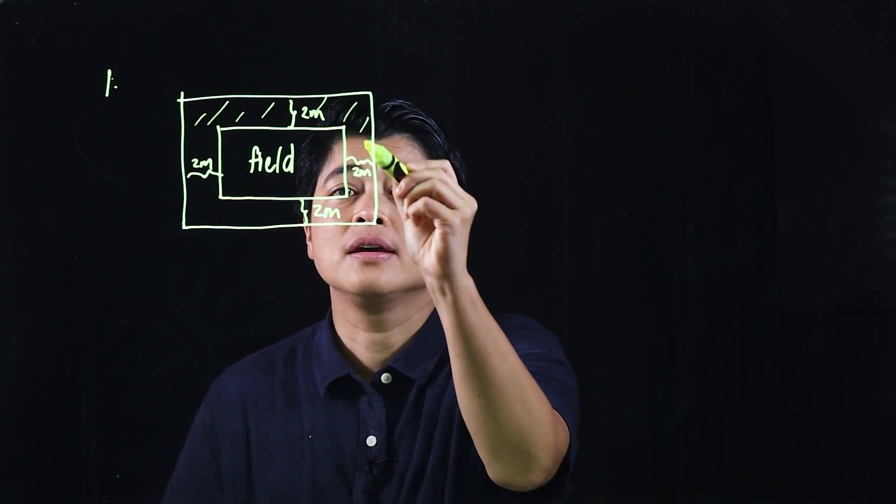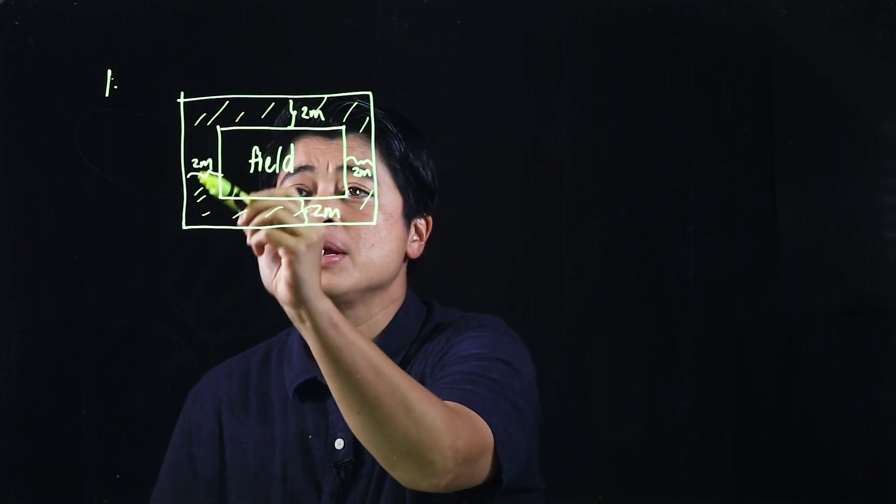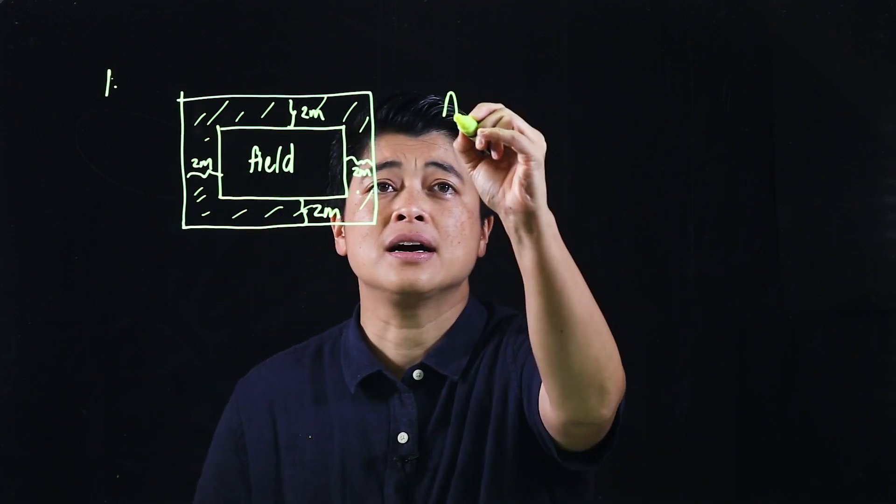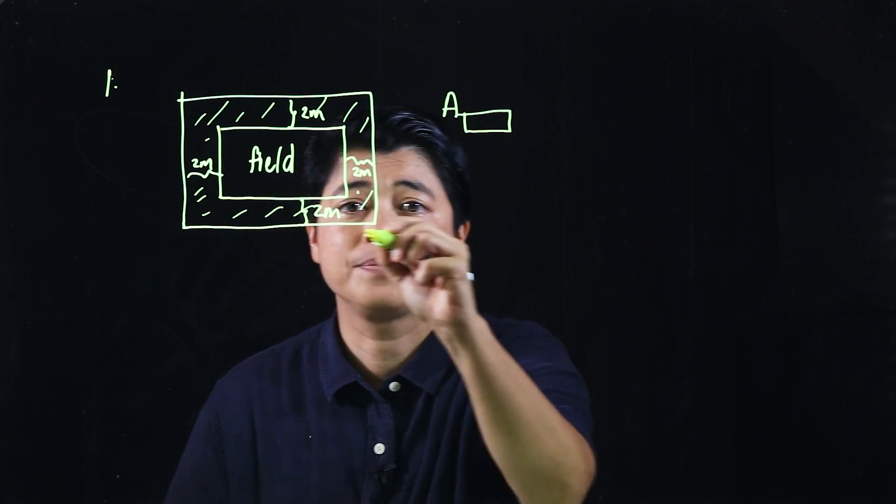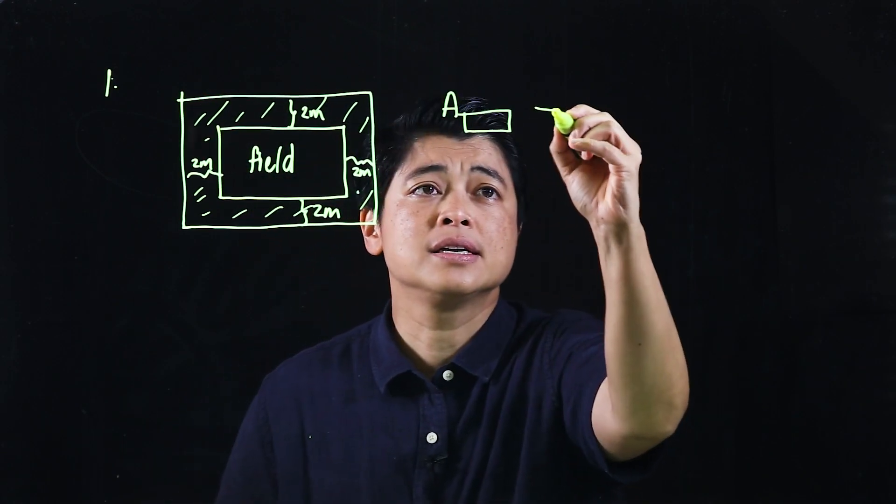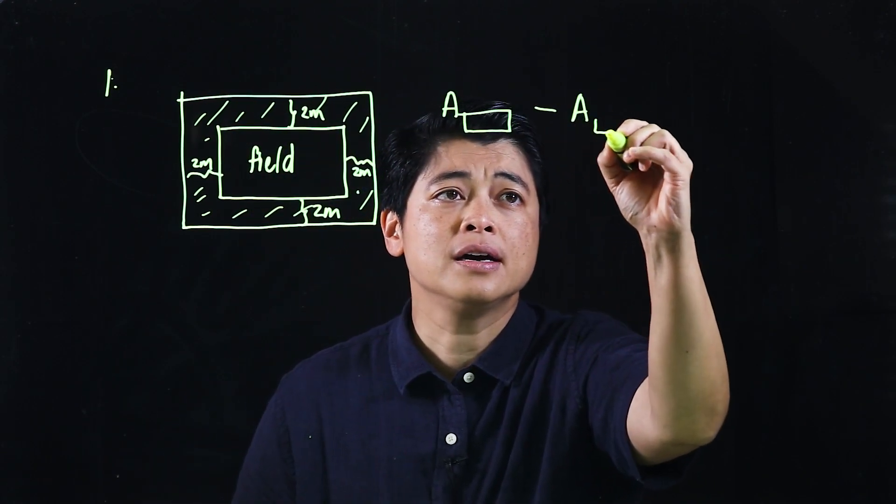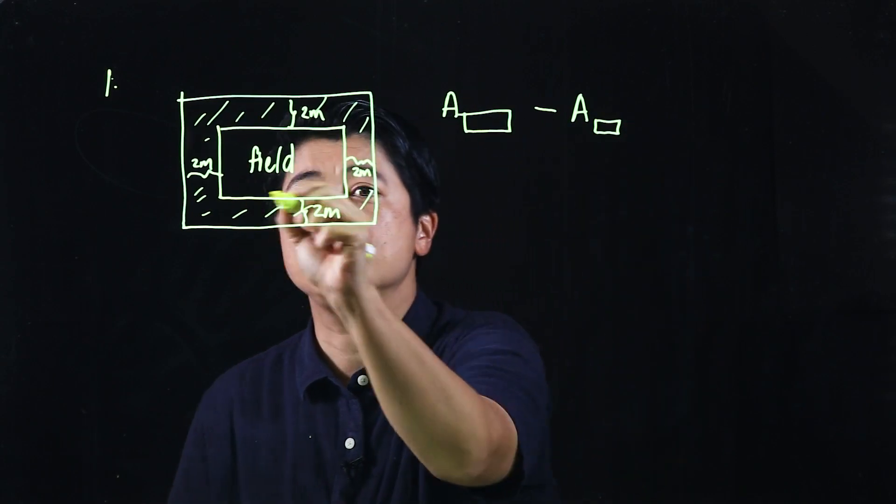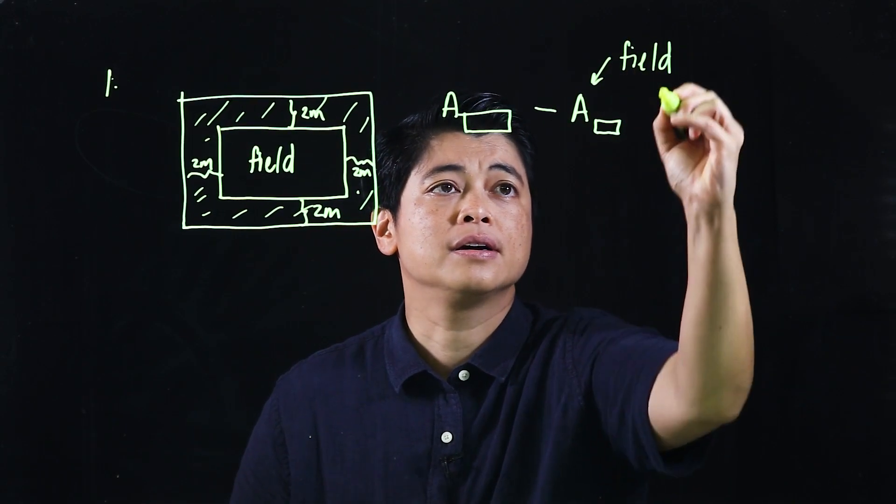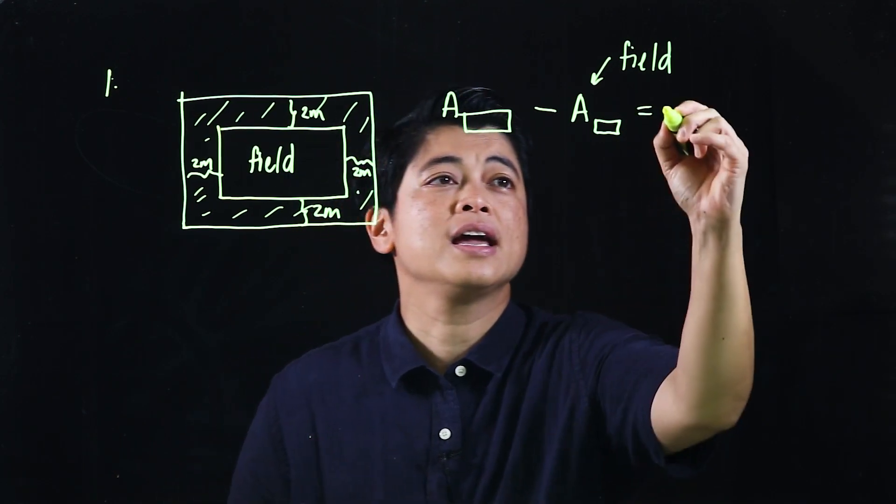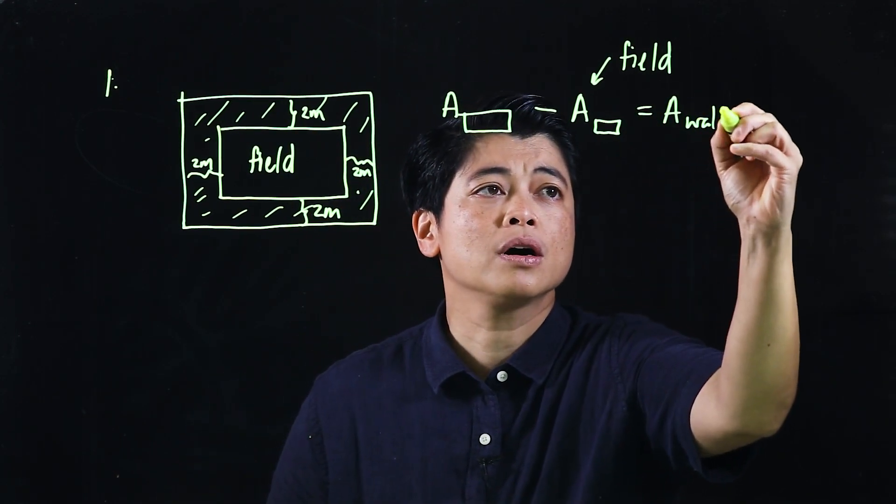To find that, we basically need the area of the big rectangle, this one, minus the area of the smaller rectangle, the field. So this is the field, which gives us the area of the walkway.